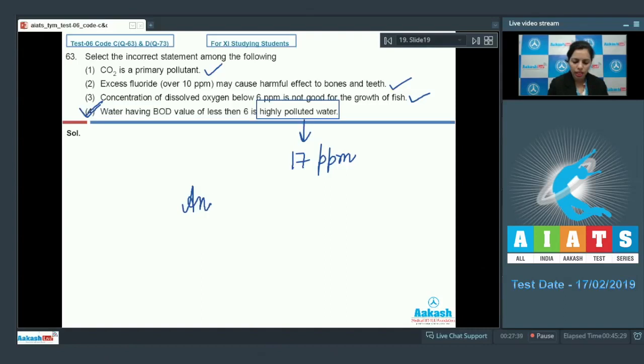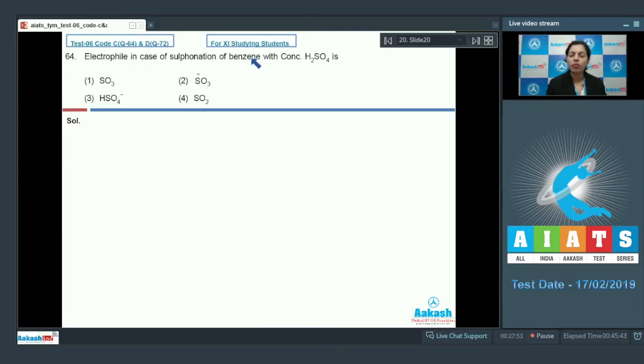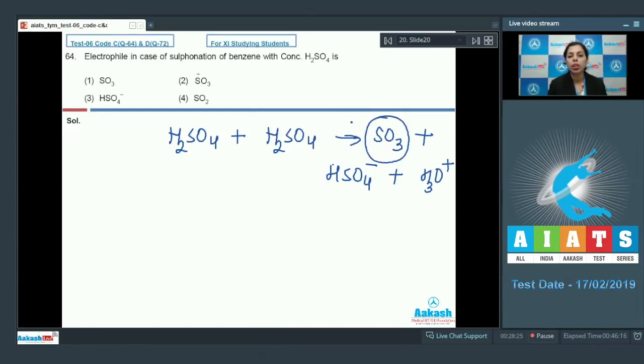Question number 64: Electrophile in case of sulfonation of benzene with concentrated sulfuric acid. Just recall the process of sulfonation of benzene - in that case we use concentrated H2SO4. In that case the electrophile is generated, and that is SO3. Along with that there is the formation of HSO4 negative ion and hydronium. These two species are formed. So electrophile in this case is SO3. Is it given in the options? Let's check - it's given here in option 1. That's why the answer is option 1.